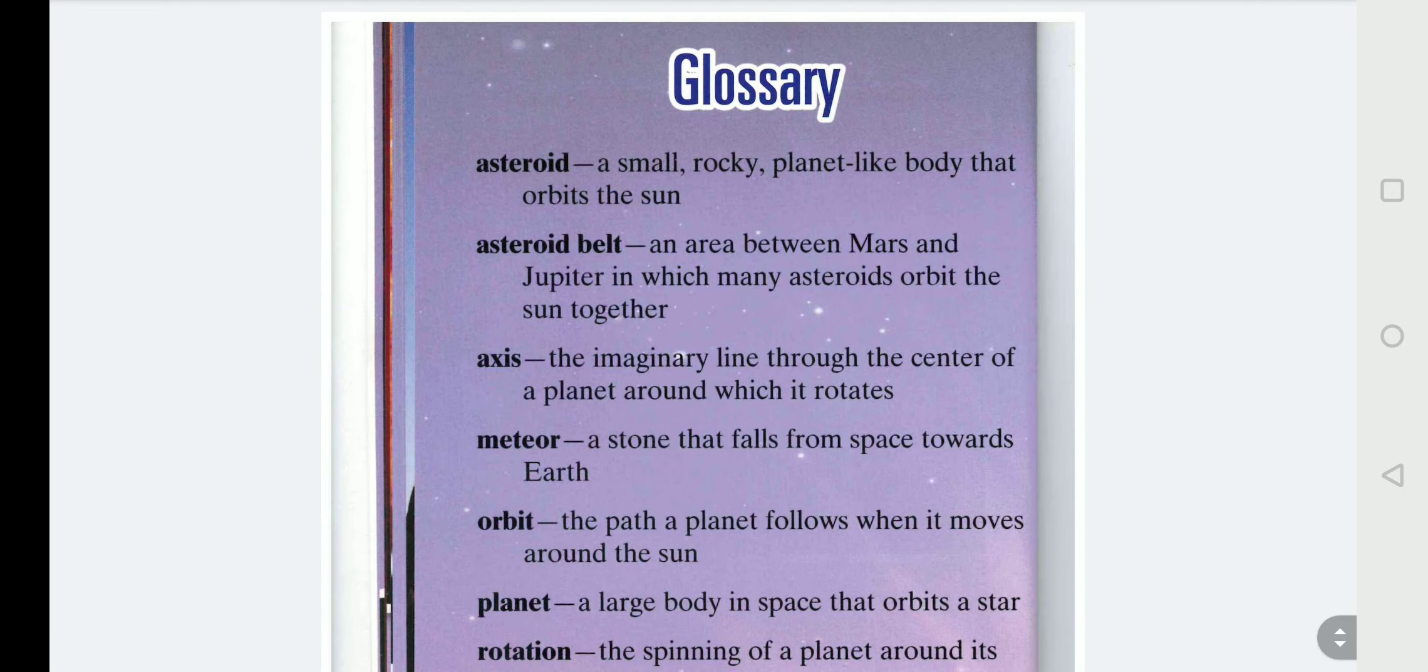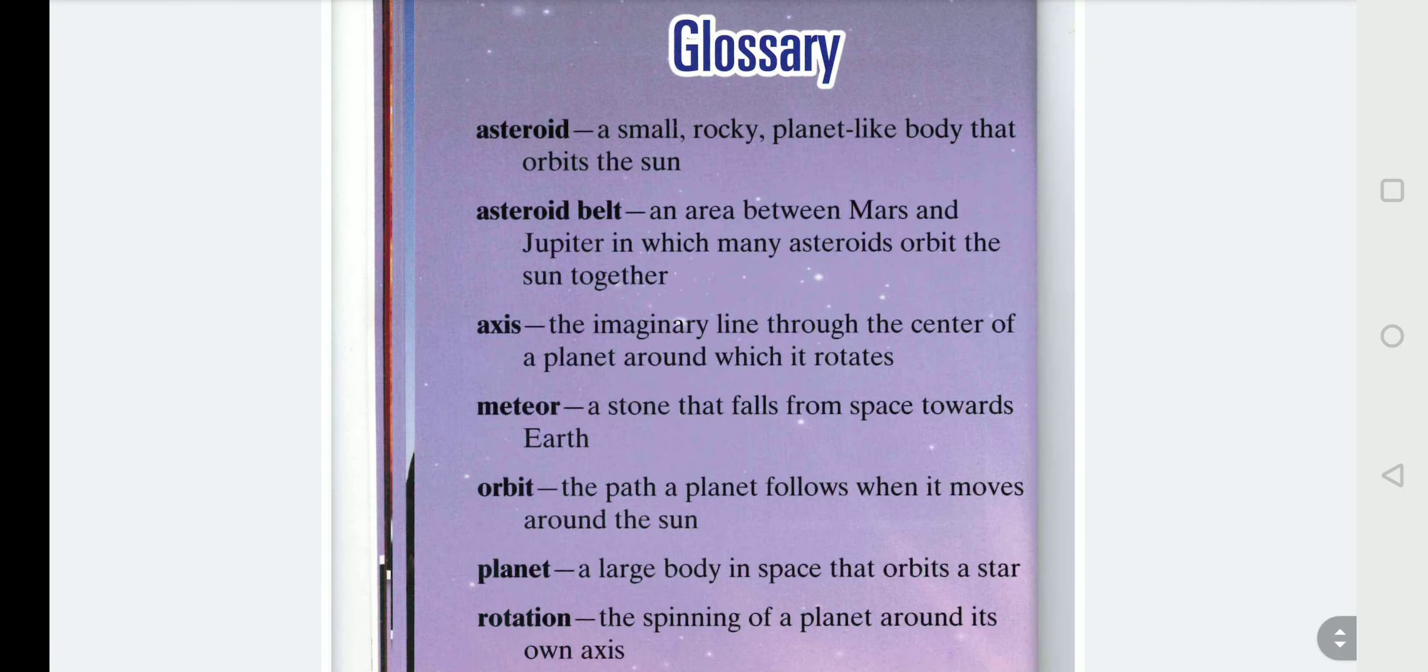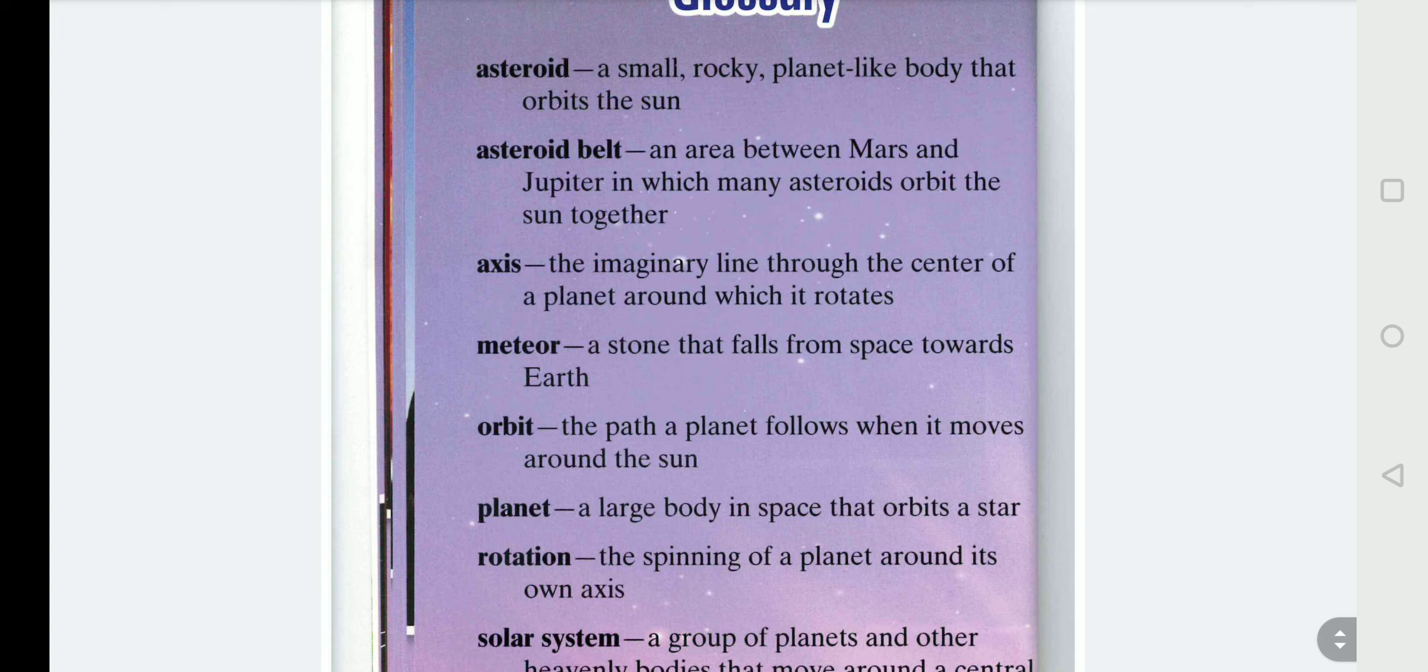Let's look at some words that you may not have heard before. Asteroid, a small rocky planet-like body that orbits the Sun. Asteroid belt, an area between Mars and Jupiter in which many asteroids orbit the Sun together. Axis, the imaginary line through the centre of a planet around which it rotates. Meteor, a stone that falls from space towards Earth.